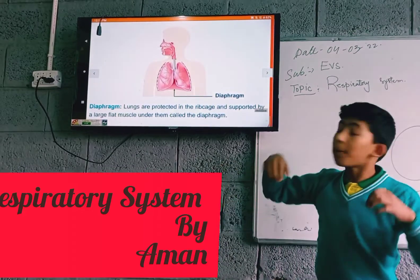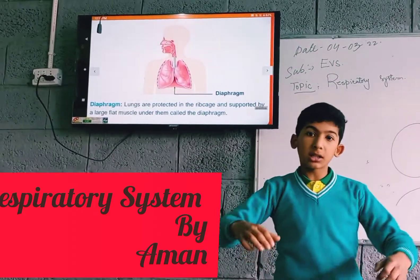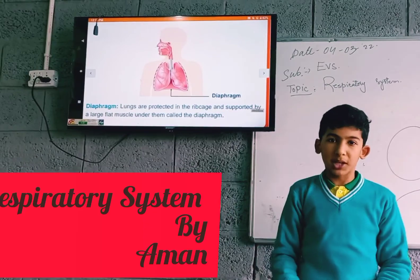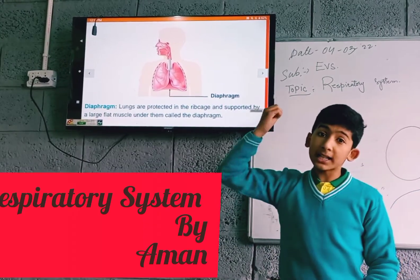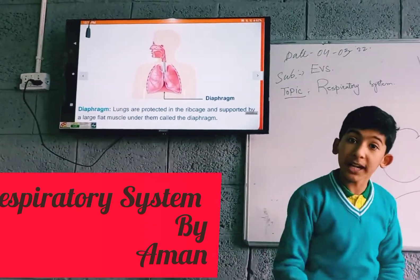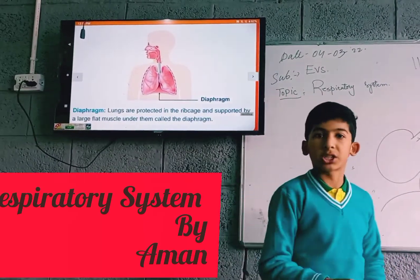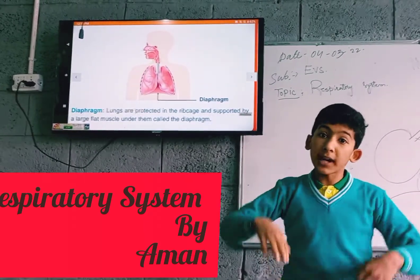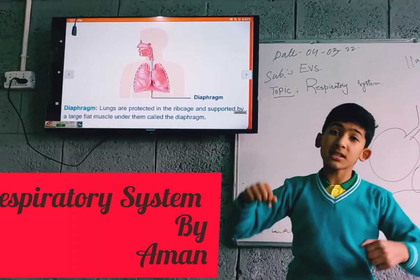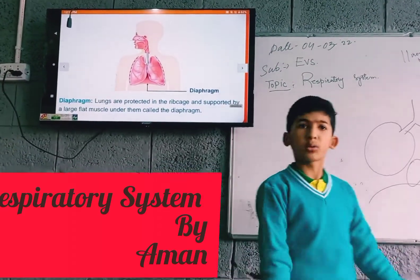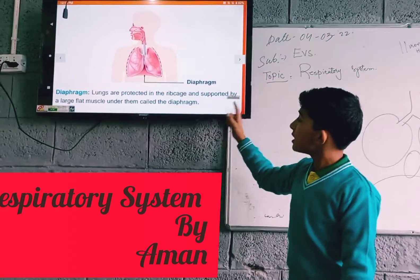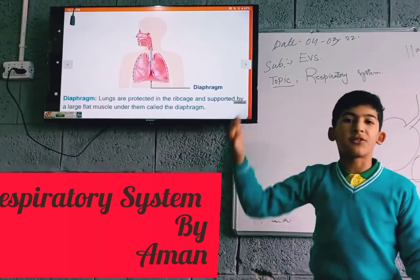The lungs are protected by the rib cage. The rib cage covers the lungs, which are present inside it. There is also a structure that separates the digestive system from the respiratory and circulatory systems so they can function independently. Otherwise, the digestive system would be connected to the others. This structure is supported by muscles — the diaphragm.